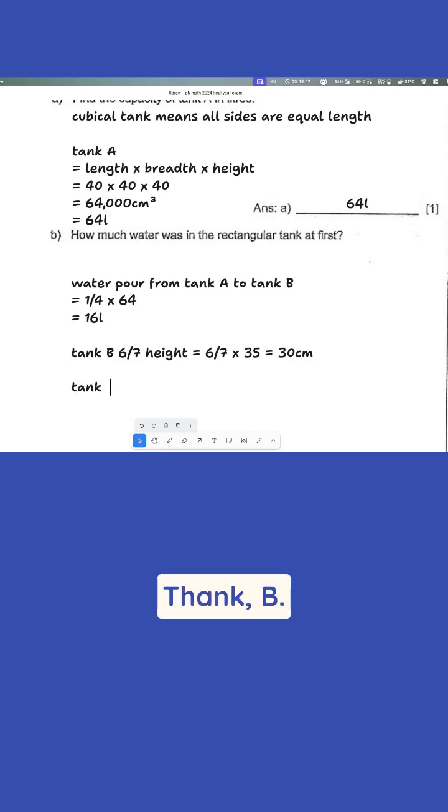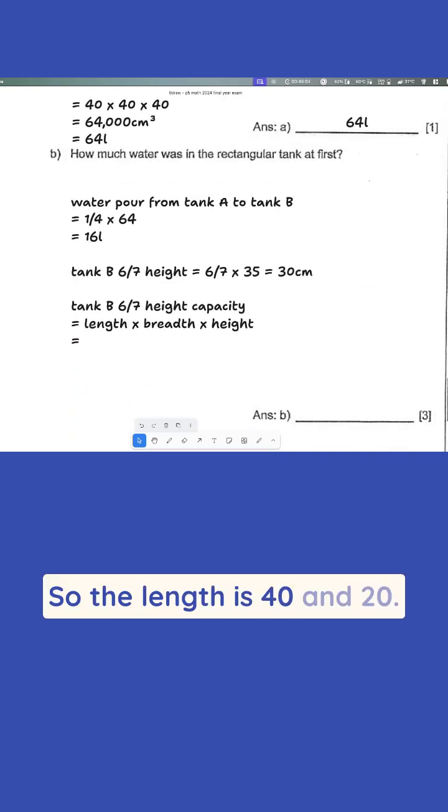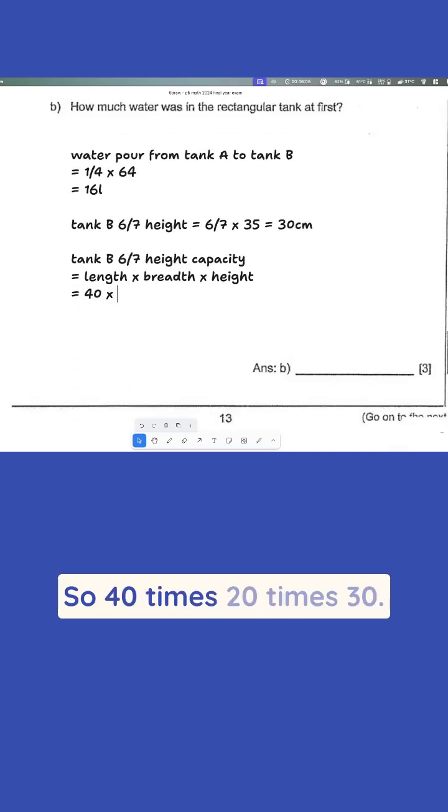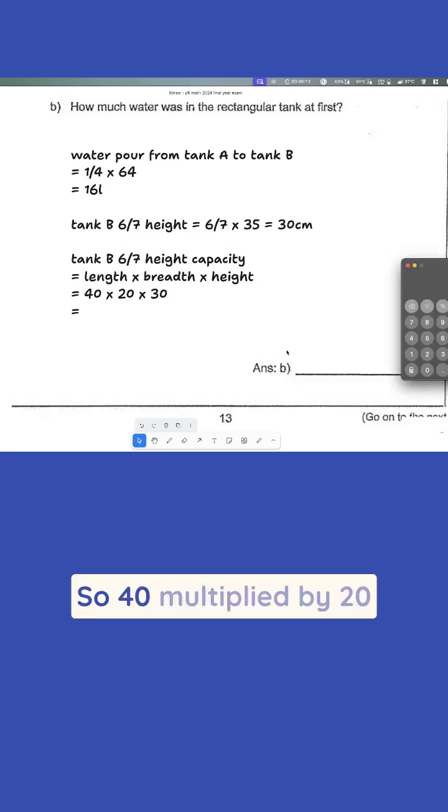So tank B is 6/7 height capacity, right, is equal to length times breadth times height. Okay, so the length is 40 and 20, so 40 times 20 times 30. This will become, let's use the calculator, so 40 multiplied by 20 multiplied by 30.